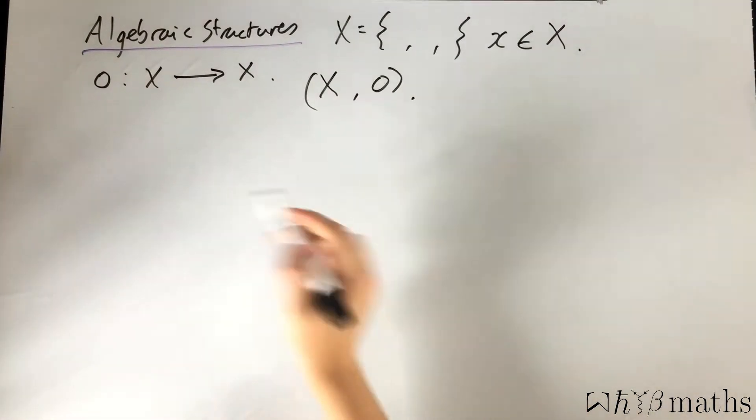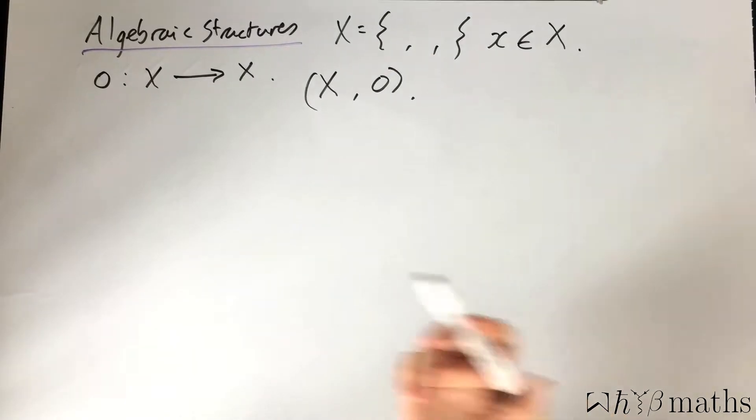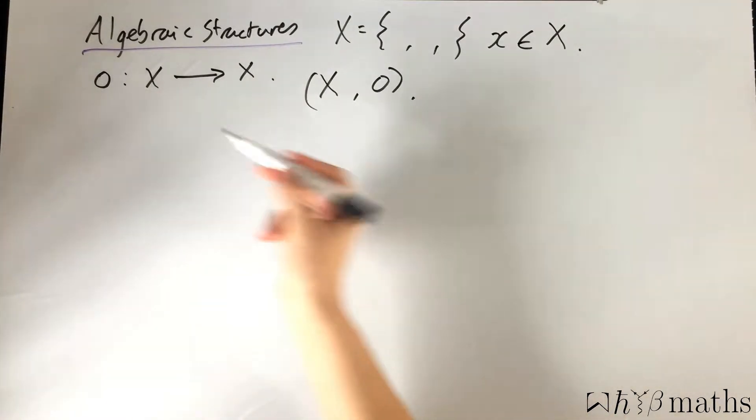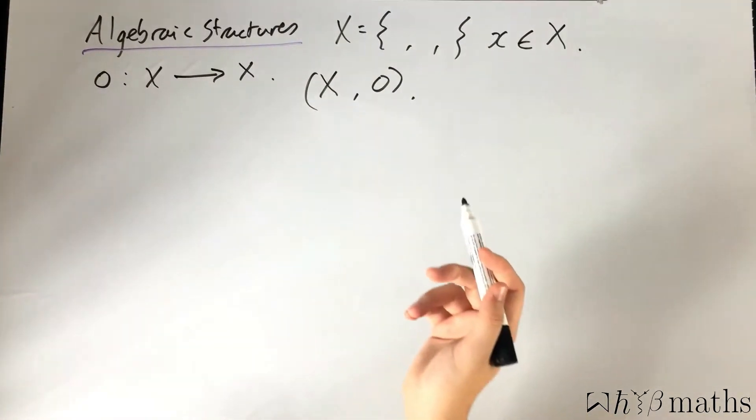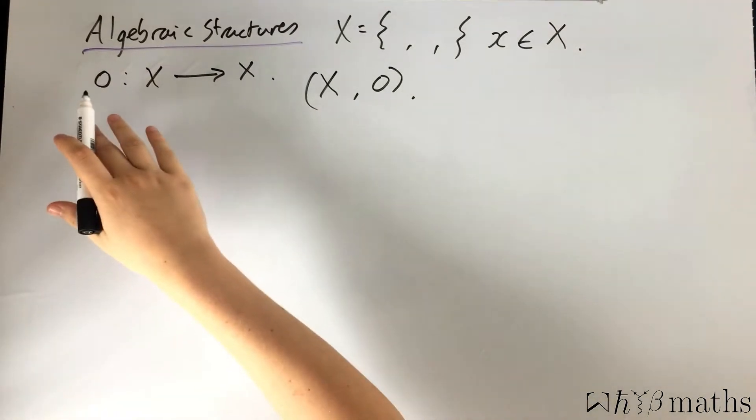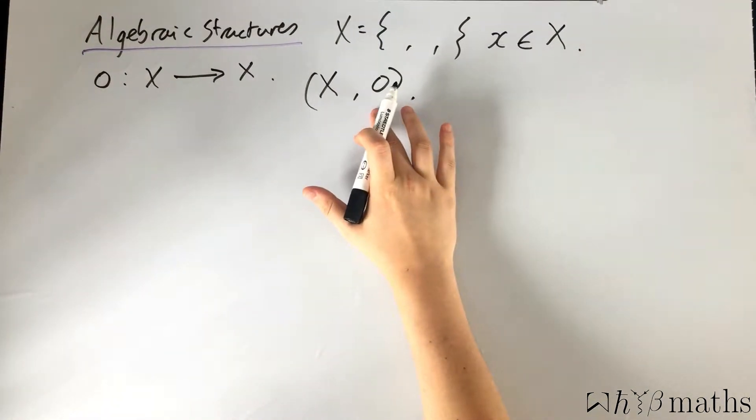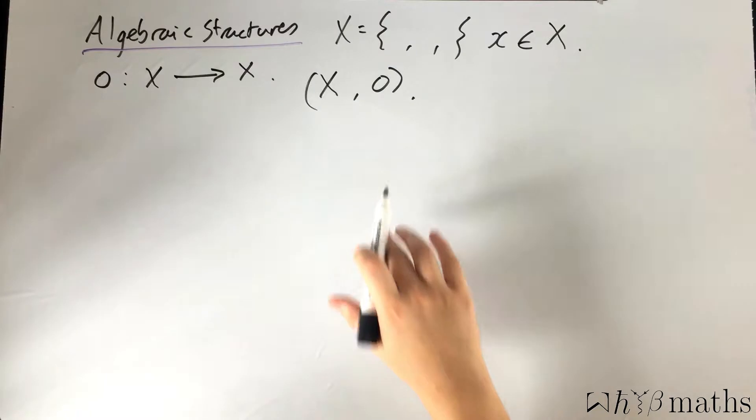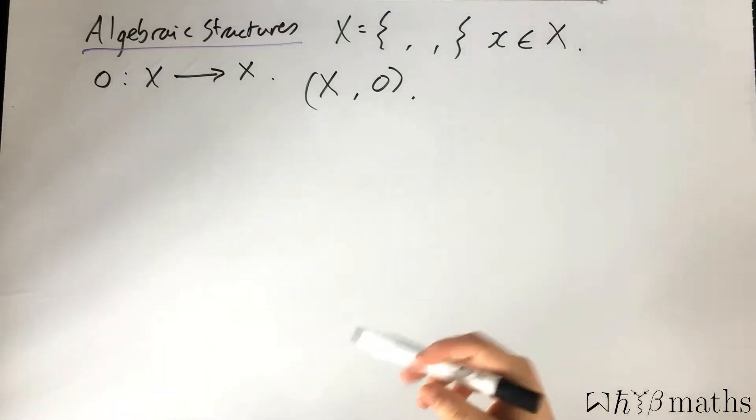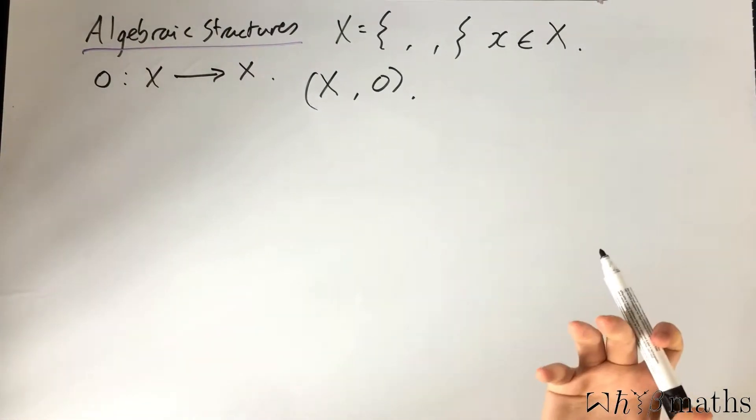This map will come with a list of rules which tells you how you can map different elements to other elements. And it's the set taken along with this operation, and the set of rules that this operation must satisfy, that is what defines an algebraic structure.